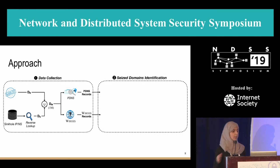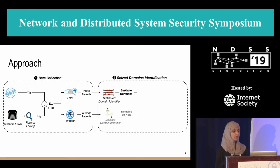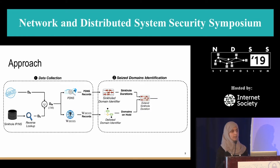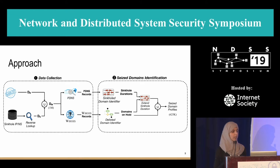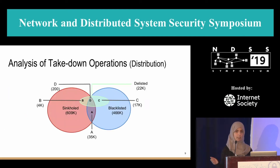With the dataset collected, we began analysis. We analyzed the passive DNS information to calculate the sinkhole duration. We also built an algorithm to analyze WHOIS data to identify taken-down domains through delisting. For domains that started as sinkholed and then went on hold, we extended the takedown duration by the expiration date of the hold record. In total, we ended up with 625k taken-down domains on which we built our analysis.